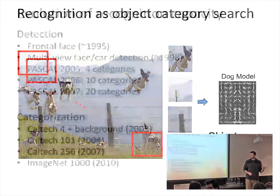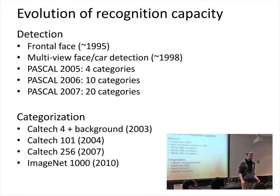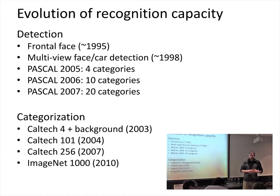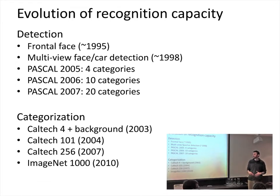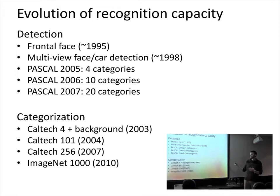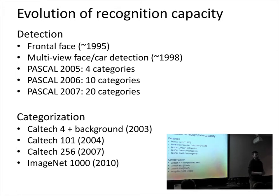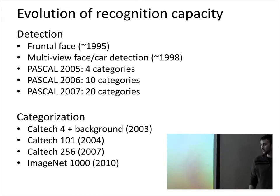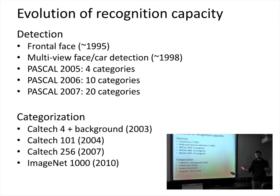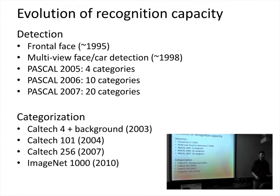This basic framework started with face detection around 1995, when statistical template matches started to work fairly well. Eventually people wanted to broaden object recognition capacity by making more categories — from faces to cars or pedestrians. The Pascal challenge started with 4 object categories in 2005, expanded to 10 in 2006, then 20. For image categorization, we went from Caltech 4 to 101, 256, and finally 1000 categories.